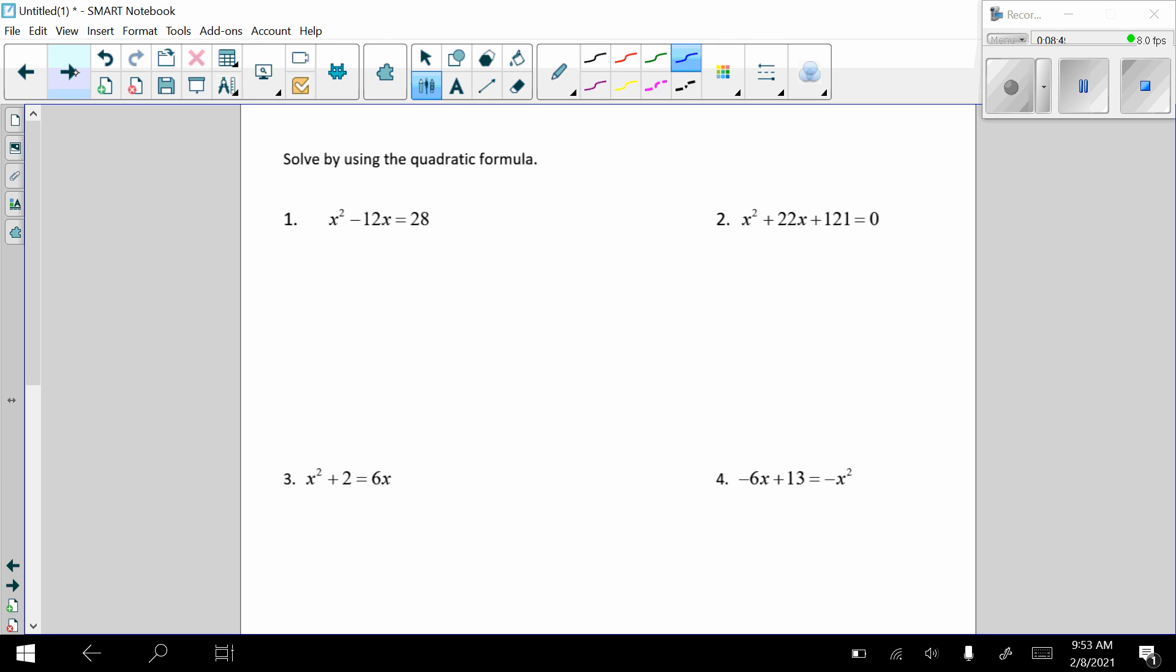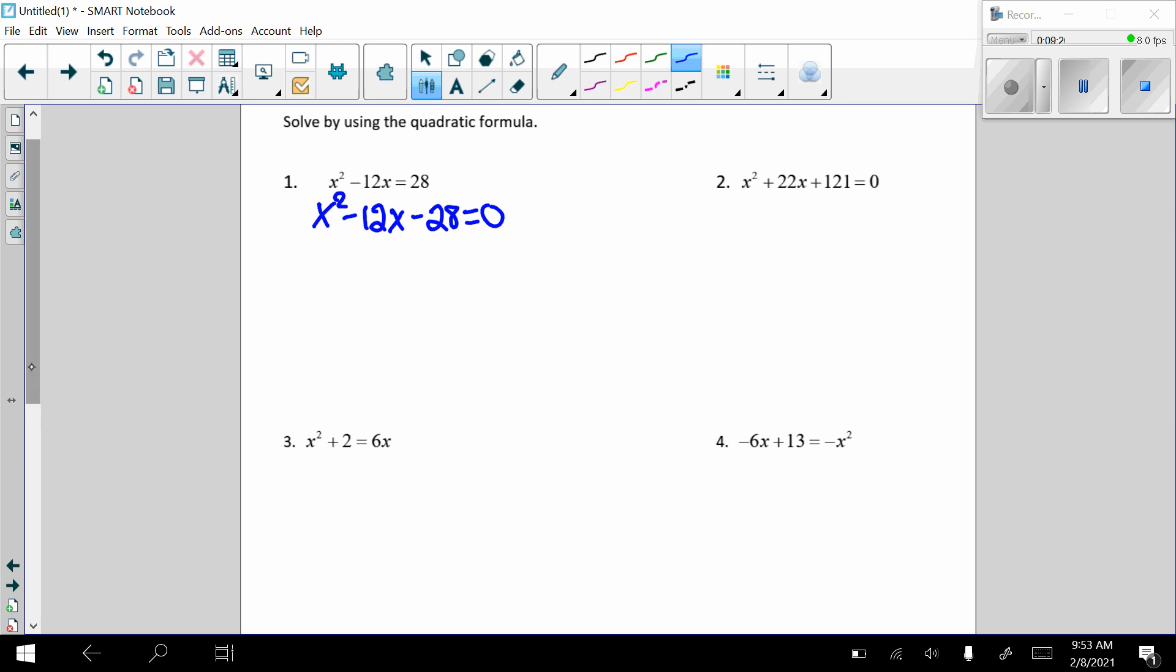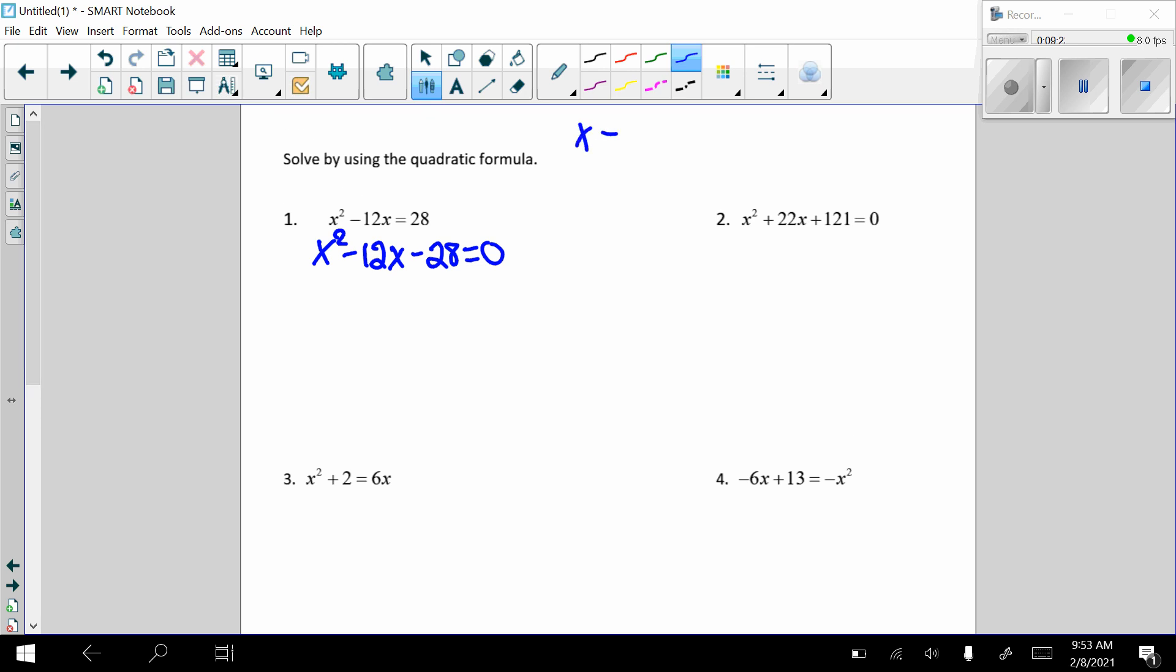If you turn over to, it should be page 24 in your packet. There's a couple here that we're going to try. Let's do this first one together, and then I'm going to have you try some on your own. So first thing, get everything on that same side, just like we did in the last one, x squared minus 12x minus 28 equals 0. Okay? Again, our a is 1, b is negative 12, c is negative 28. Make sure they're in that descending order before you plug it in. Let me write that quadratic formula for you here again. Again, negative b plus or minus square root of b squared minus 4ac all over 2a.